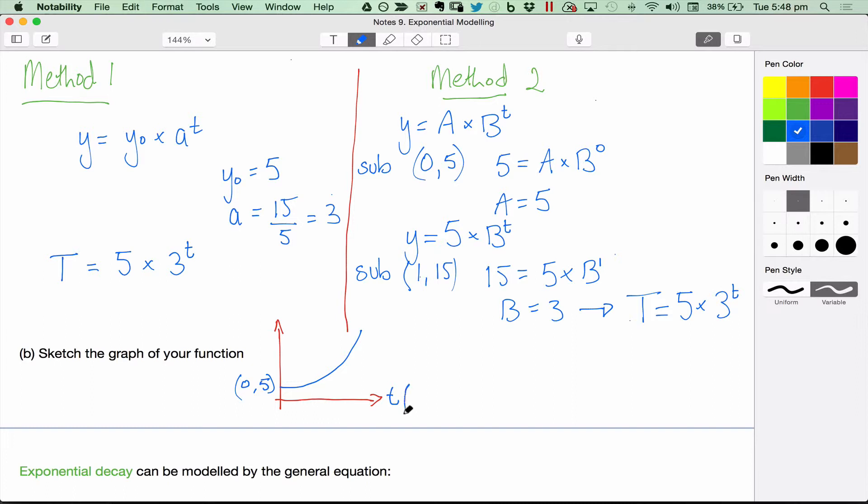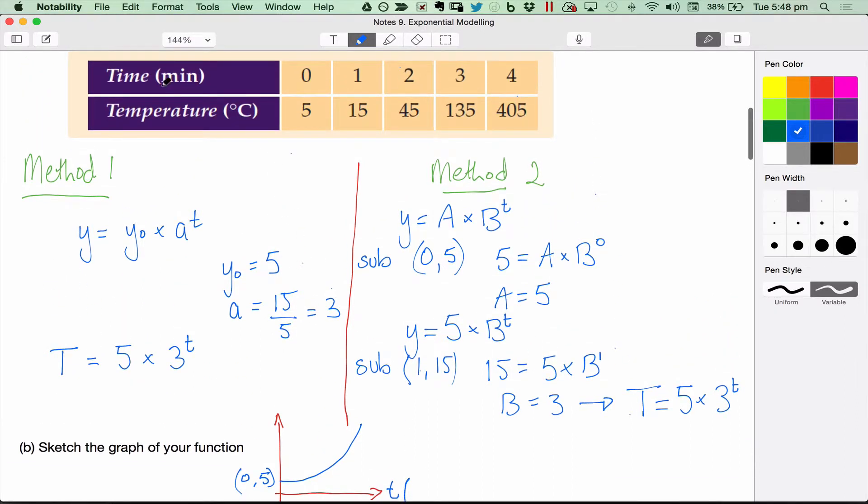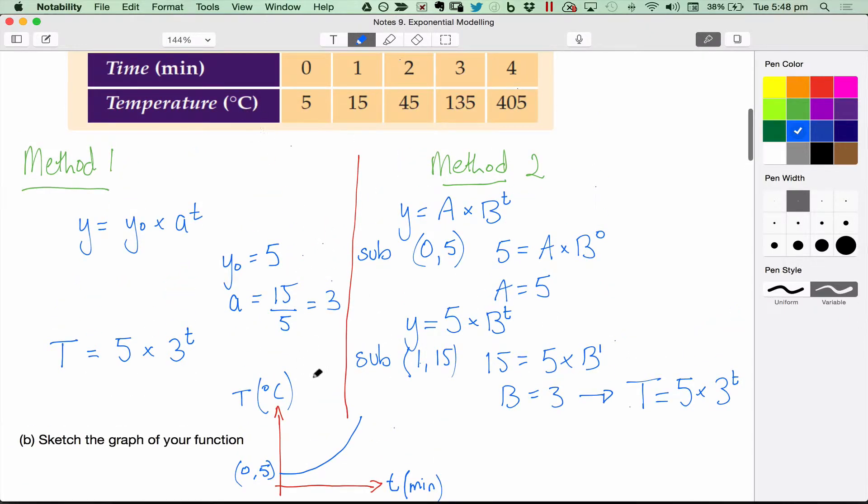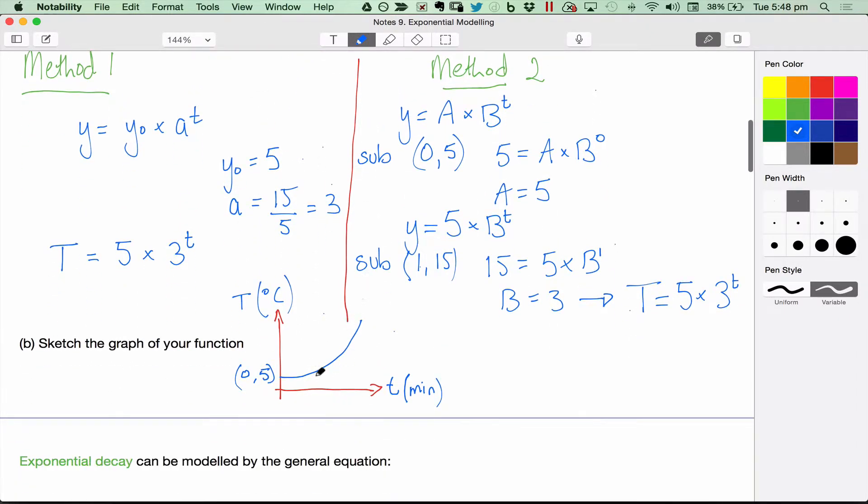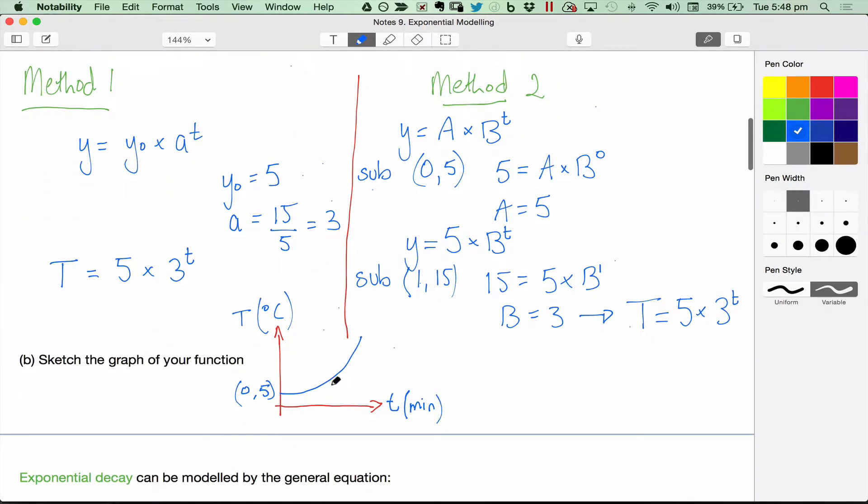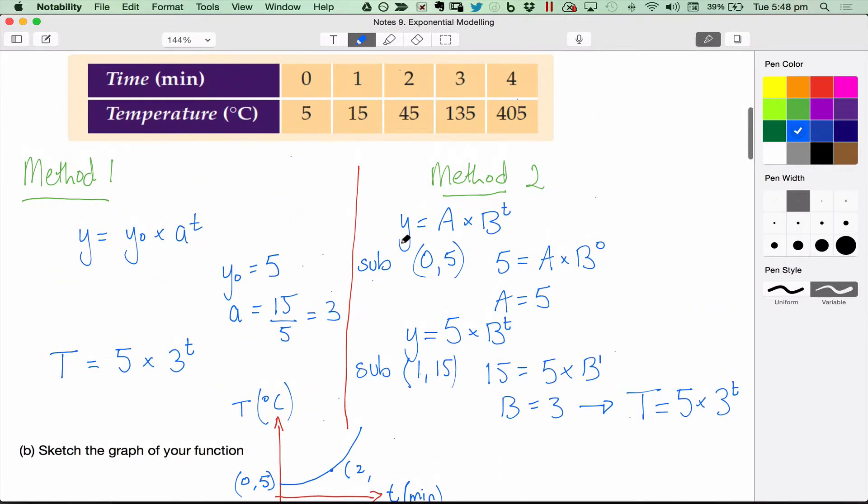So we could put t for time, and you need to say what the units are. This one's in minutes. And this one will be temperature in degrees Celsius. I think that's what it was. Yep. And there you go. If you want to put one other point on the graph, you can. You can pick one of these, a 2 or a 3. Put it in here, 2, 45. But that's not necessary.